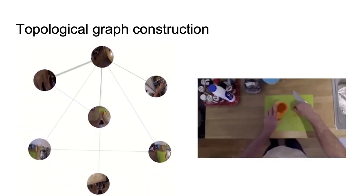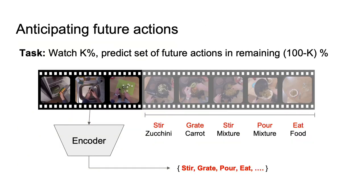We'll now see two important tasks that we use our ego-topo graphs for: anticipation and scene affordances. In our long-term anticipation experiments, the model must watch a fraction of a video and then predict the set of future actions in the remaining video. Unlike traditional anticipation which focuses on predicting the action in the next one second, this task requires an understanding of how much of an activity has elapsed and what's required to complete it.